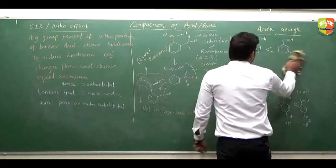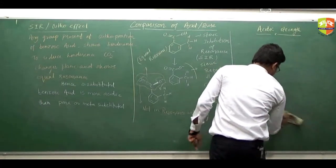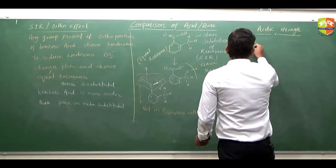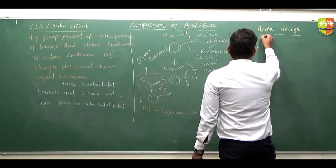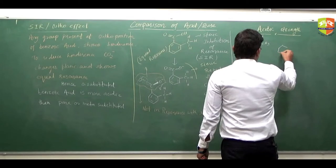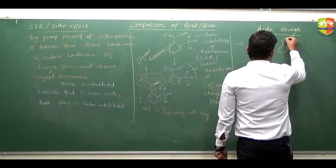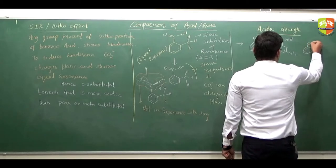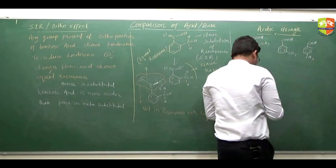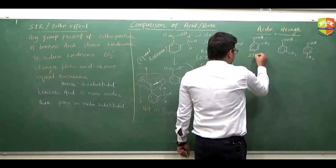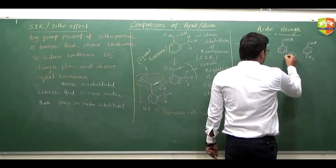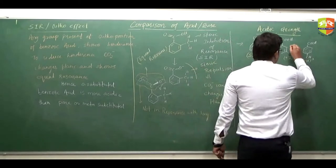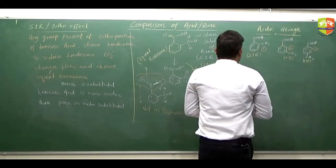For example, with CH₃ groups: the ortho-substituted shows SIR effect, the second shows plus I effect, and the third shows plus H effect. So the order is: SIR maximum (rank 1), then plus I (rank 2), then plus H (rank 3).